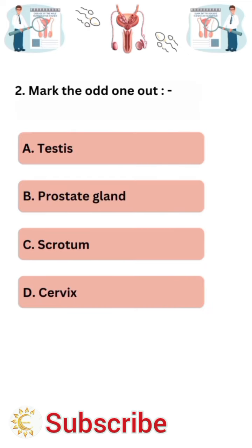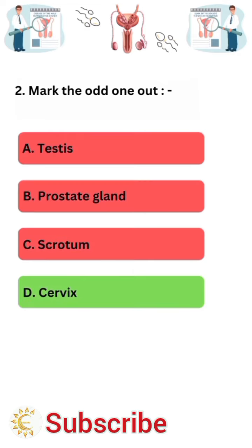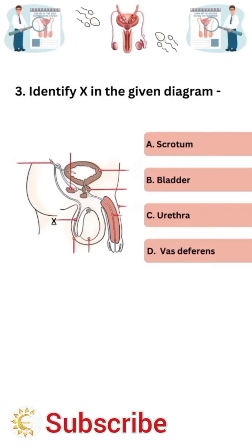Mark the odd one out. Testes, prostate gland, scrotum are parts of the male reproductive system, whereas cervix is part of the female reproductive system. So cervix is the correct answer.